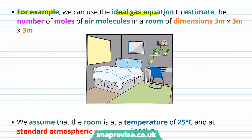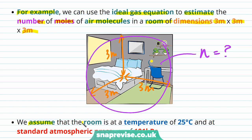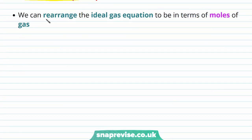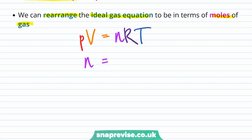For example, we can use the ideal gas equation to estimate the number of moles of air molecules in a room of dimensions 3m by 3m by 3m, at a temperature of 25 degrees Celsius and standard atmospheric pressure of 101 kPa. We rearrange the ideal gas equation in terms of moles: dividing both sides by R times T gives us n equals pressure times volume divided by R times T.